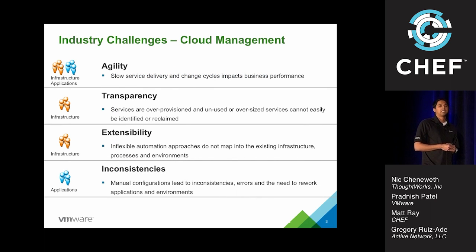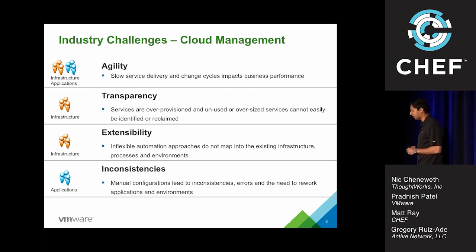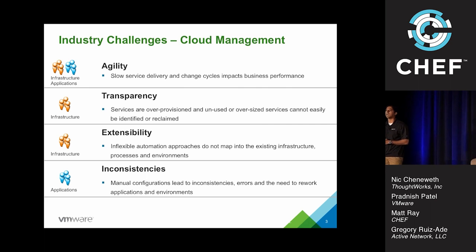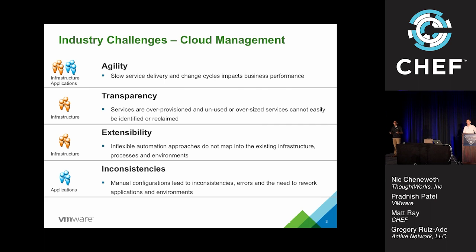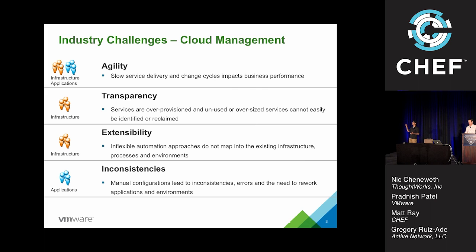As VMware, we work with hundreds and thousands of customers. As a product manager, every week I talk with multiple customers. When we think about automation, the challenges in this space are constant and consistent. When we look at agility, anybody can provision a VM very quickly nowadays. But when we're talking about three-tier application or three-tier application lifecycle management, we still don't have that agility.